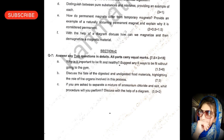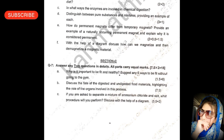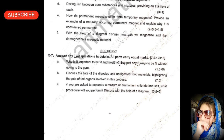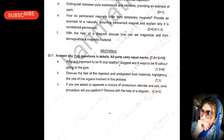Section C questions: with the help of a diagram, discuss how we can magnetize and then demagnetize a magnetic material. Why is it important to be fit and healthy? Suggest any six ways to be fit without going to the gym. Describe the fate of digested and undigested material, highlighting the role of the organs involved. If you are asked to separate a mixture of ammonium chloride and salt, what procedure will you perform? Discuss with the help of a diagram.